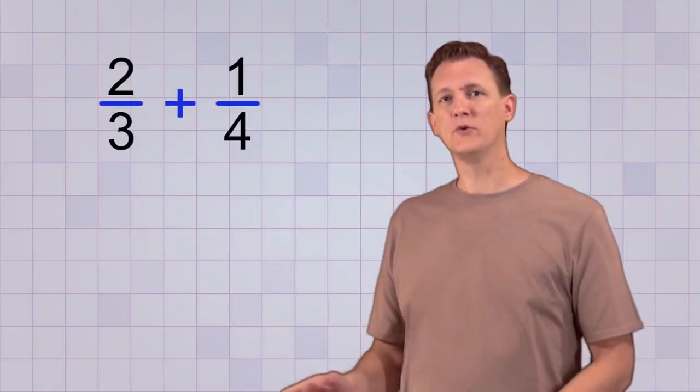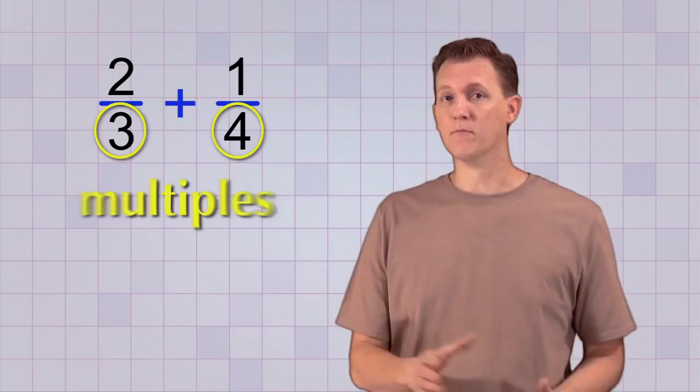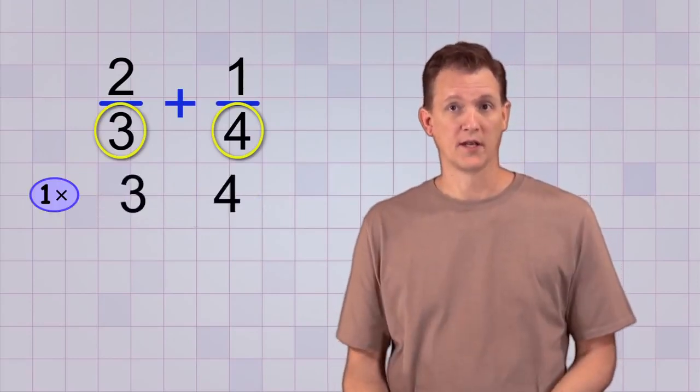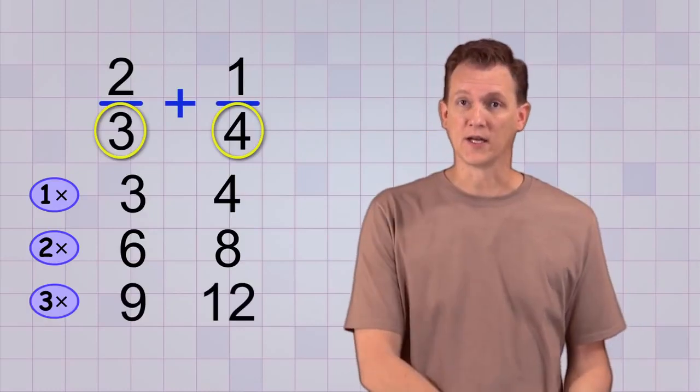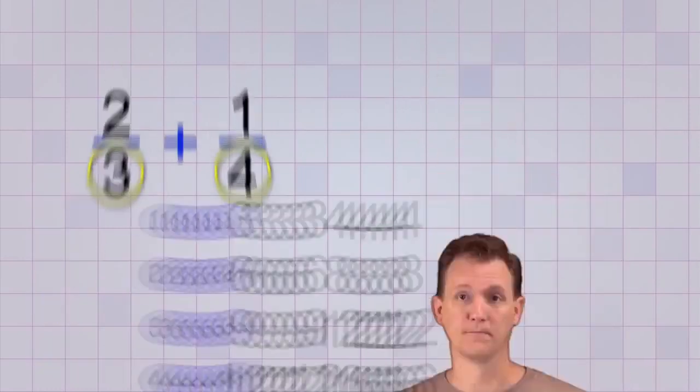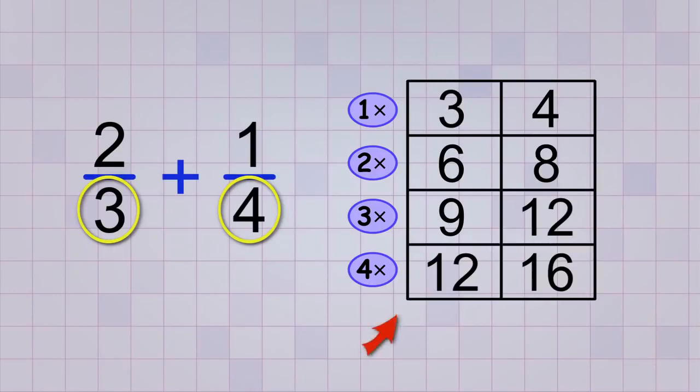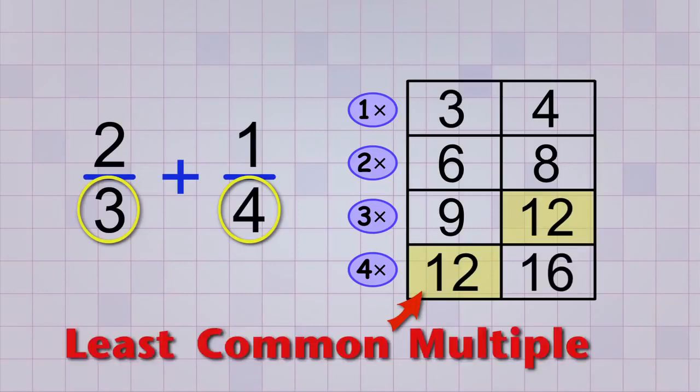First, we'll take the two different bottom numbers and start making multiples of each of them. We start with 1 times the numbers, and then 2 times, and then 3 times, and 4 times, and so on. It helps to arrange these multiples in a small table, almost like a scoreboard, so that you can keep things organized and easy to find. We'll stop making multiples as soon as we find an answer that's the same for both numbers. That answer is called the least common multiple, and it will become our new common denominator.